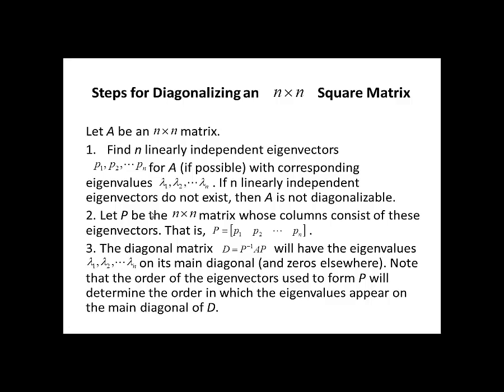Steps for diagonalizing an N by N square matrix. Step 1: Find N linearly independent eigenvectors P1, P2, ..., Pn corresponding to eigenvalues lambda 1, lambda 2, ..., lambda n. Step 2: Let P be the N by N matrix whose columns consist of these eigenvectors, i.e., P equals [P1, P2, ..., Pn]. Then D equals P inverse AP is a diagonal matrix whose diagonal entries are lambda 1, lambda 2, ..., lambda n. Note that the order of the eigenvectors used to form P determines the order in which the eigenvalues appear on the main diagonal of D.